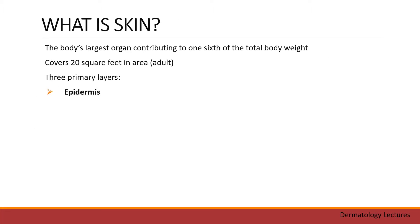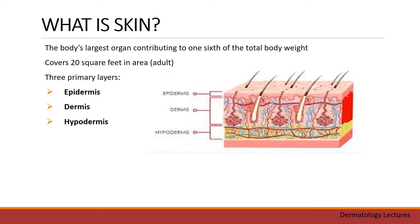Skin is the body's largest organ, contributing to one sixth of the total body weight. It covers 20 square feet in area and it has three primary layers: epidermis, dermis, and hypodermis.